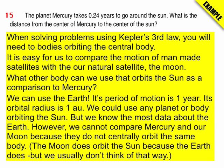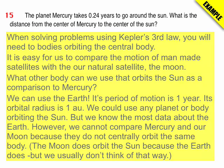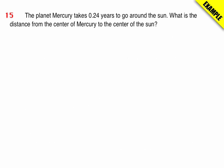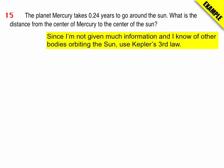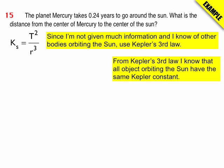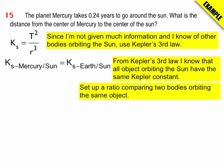Okay, so back to our problem. The planet Mercury takes 0.24 years to go around the Sun. What is the distance from the center of Mercury to the center of the Sun? Well, I'm going to use Kepler's third law, because I need two objects, and I have two objects. From Kepler's third law, I know that all the objects orbiting have the same constant. That is, the constant between Mercury and the Sun, and the constant of the Earth and the Sun, they're going to be the same.